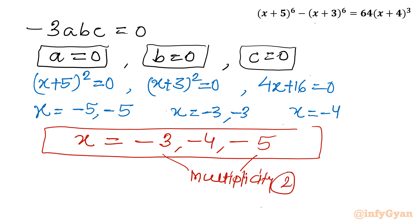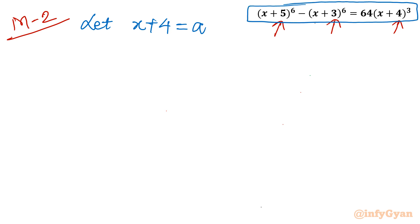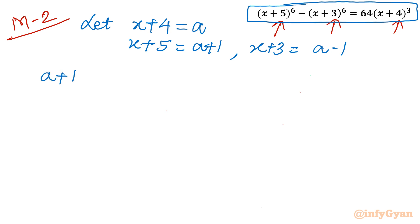Now let us consider method number 2 — the conventional or traditional method. Here I will give a substitution straight away. You can see 3, 4, and 5 are there; averaging all three gives 4. So let the substitution be x + 4 = a. Then x + 5 will be a + 1, and x + 3 will be a - 1. So the original equation becomes (a+1)⁶ - (a-1)⁶ = 64a³.